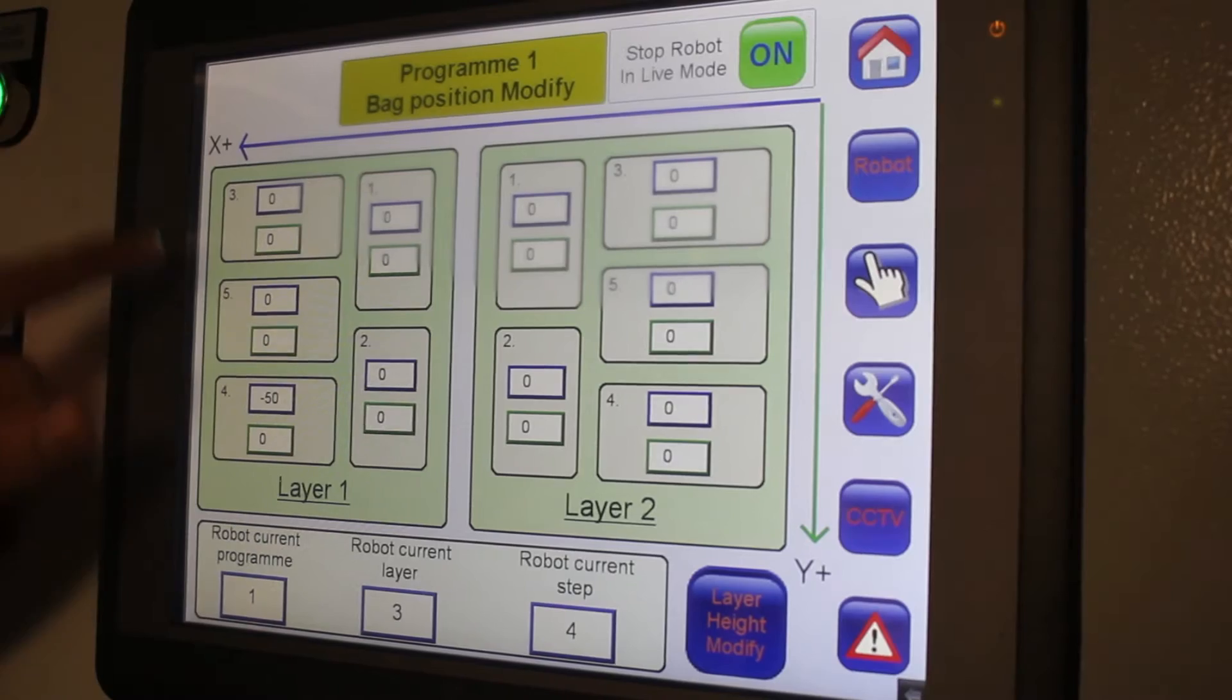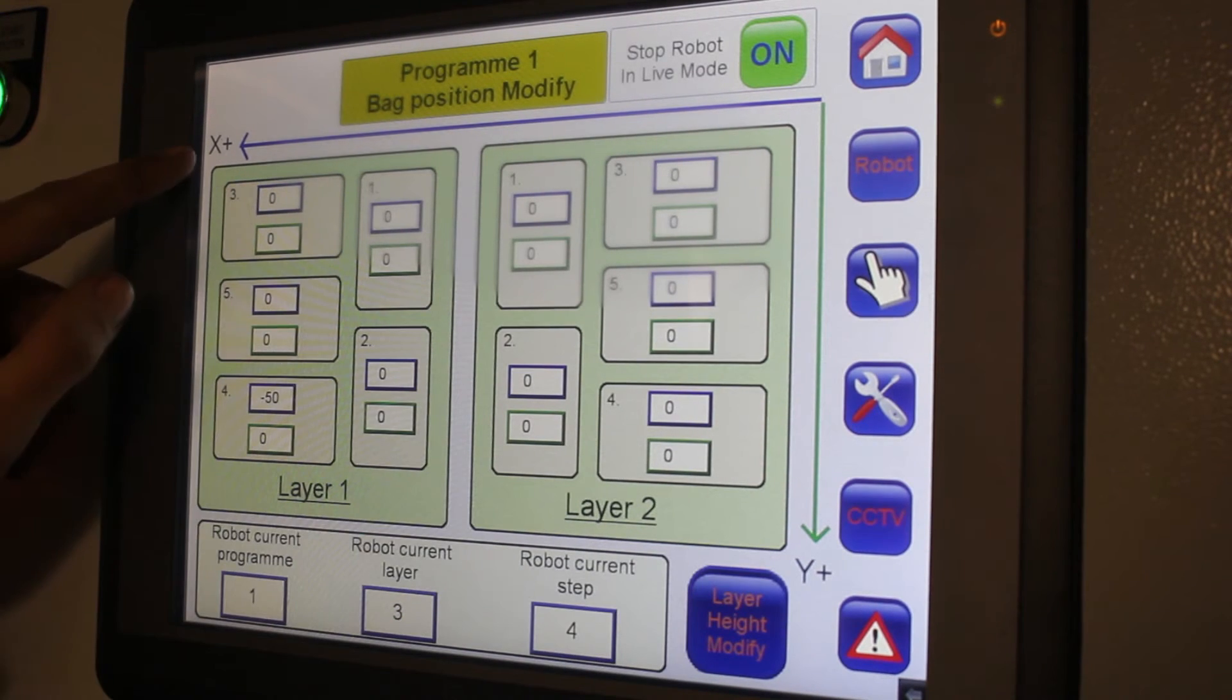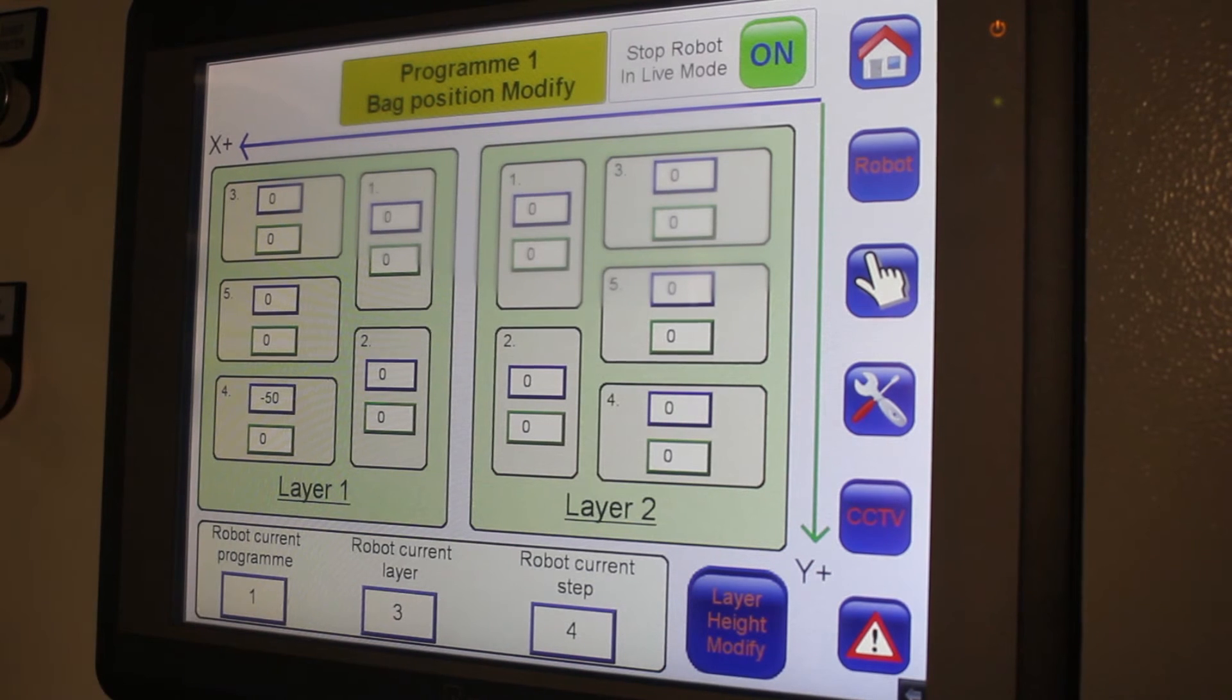The way that the X axis works is if you look at the arrow up here, you've got the Y axis this way. The X axis now will actually push the robot the one way and then obviously if you minus it, it will go the other.